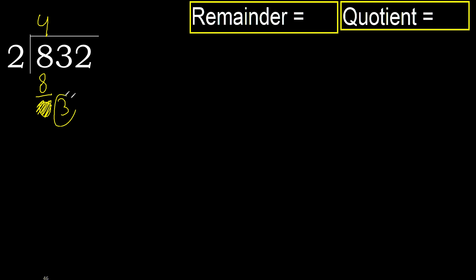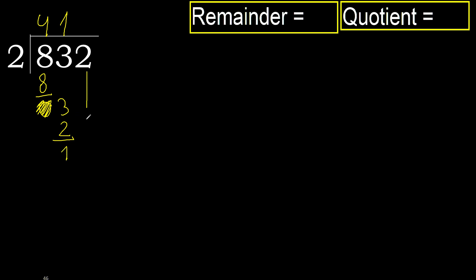3. 2 multiplied by 2 is 4 — it's greater. Multiply by 1 is 2 — it's not greater. Subtract.